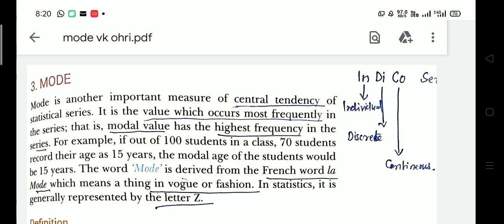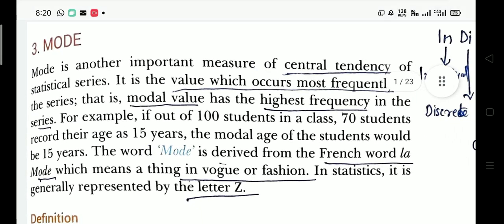When we read the arithmetic mean, we talked about direct shortcut and step division method to calculate arithmetic mean in INDIGO series. You have to remember the word INDIGO - here I have marked INDIGO, that is Individual, Discrete and Continuous Series. We also have three different series: individual series, discrete series, and continuous series.